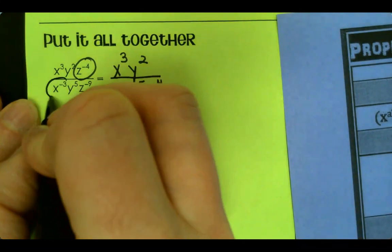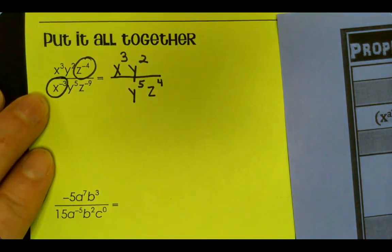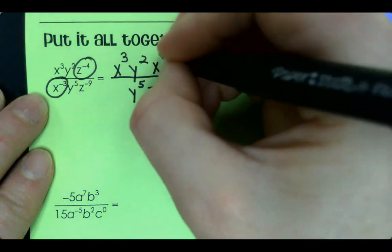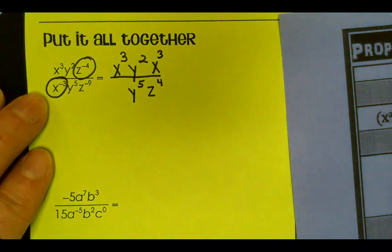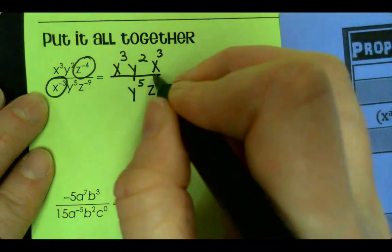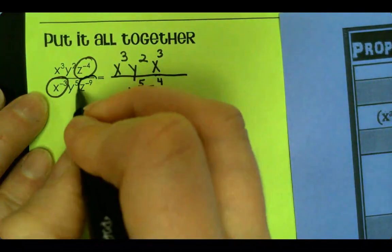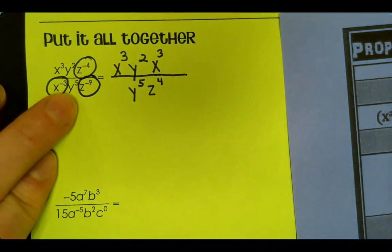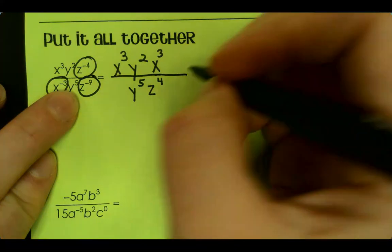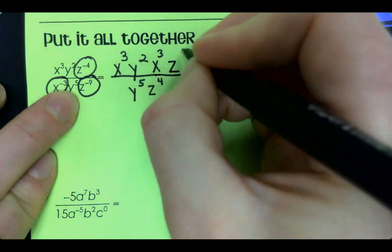So whenever I move it, I'm going to put it on bottom and make it a positive 4. And then X to the negative 3, I'm going to circle that. Since it's on bottom, I'm going to move it to the top and make it positive. And then Z to the negative 9, I'm going to circle it. It's a negative 9. I'm going to take it to the top as a 9.